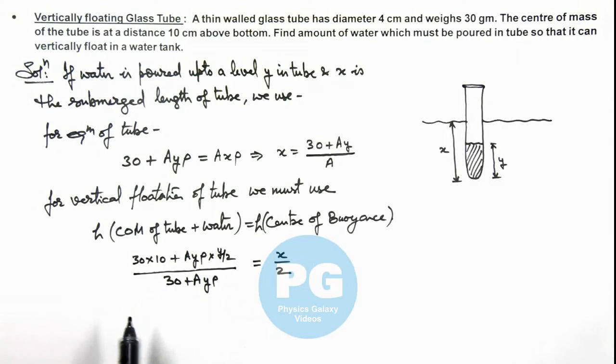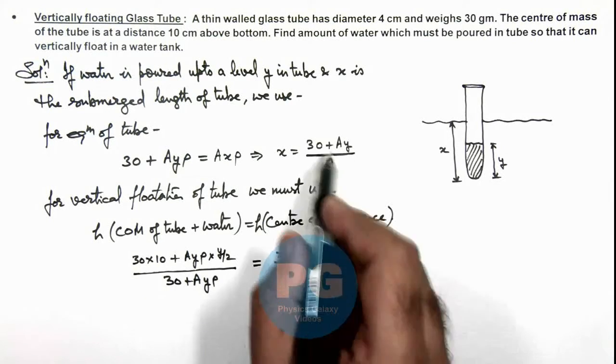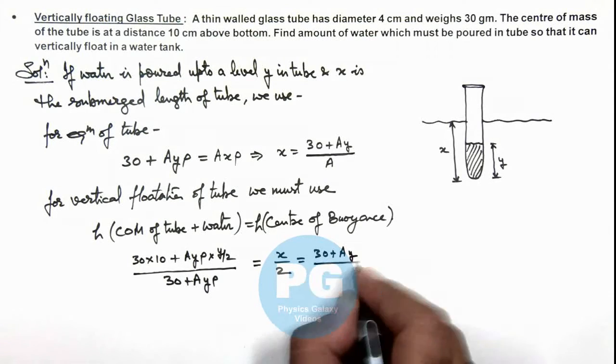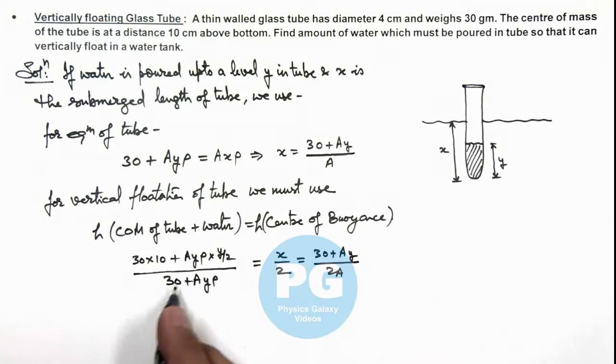And we can also substitute the value of x over here which is 30 plus A_y times y divided by 2 A_y. So simplifying this relation it gives, we can also cross multiply it. Here we can consider water density to be 1 in CGS. So this is 30 plus A_y times y whole square divided by 2 A_y is equal to 300.